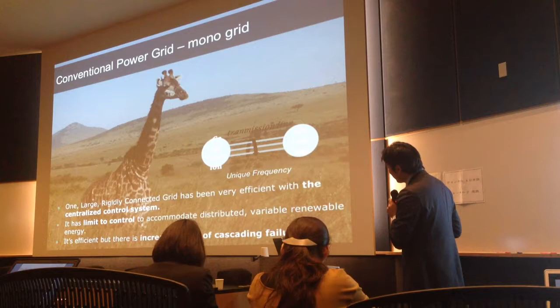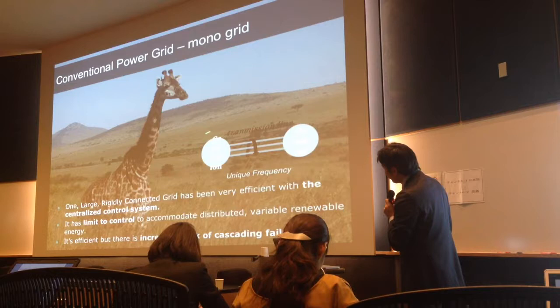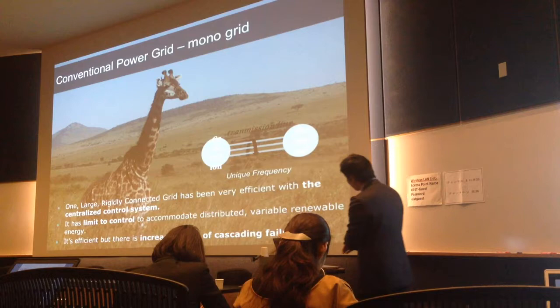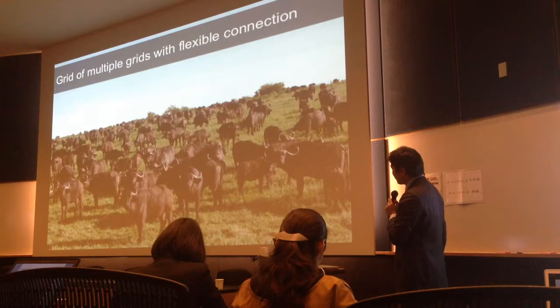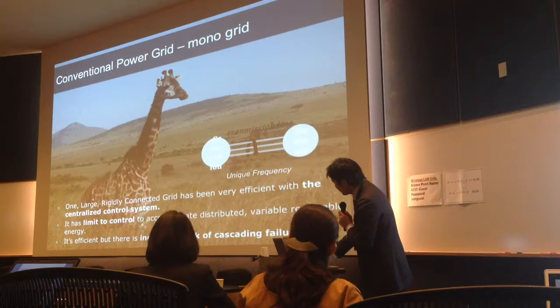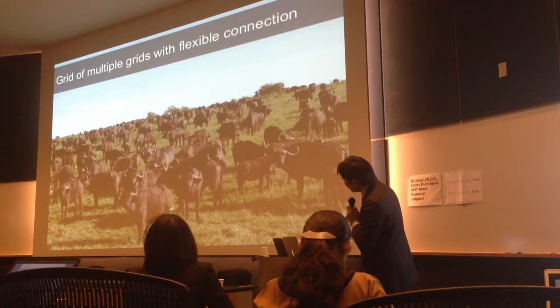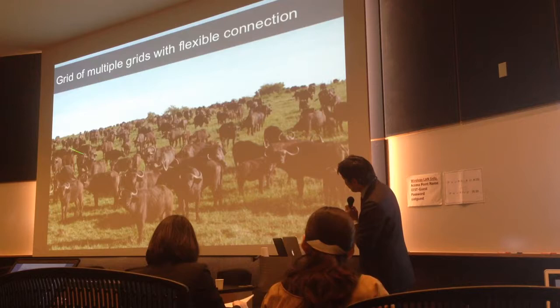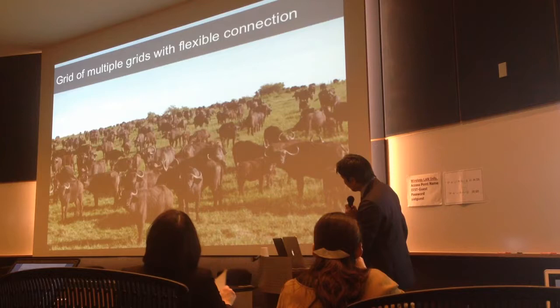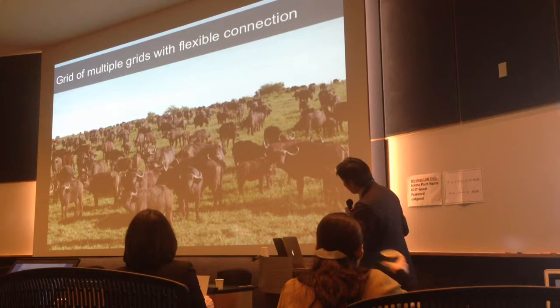The problem is that at each moment, generation and demand must be balanced. If you lose the balance, cascading failure will occur. The solution is a distributed grid architecture. Compared to the conventional grid, each individual grid cell will be somewhat weaker, but if one grid fails, the rest of the grid remains safe. We believe this has good compatibility with renewable resources.